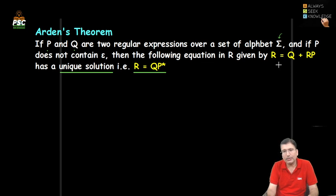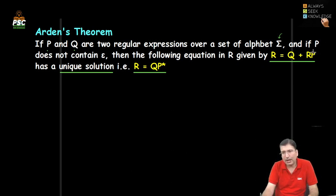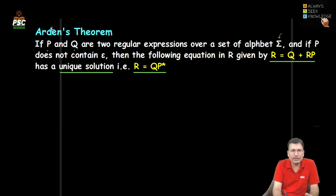Then the following equation is given: R = Q + RP. Arden's theorem says that if R does not generate null, there is a unique solution for this equation, which is R = QP*. That was the theorem given by Arden's.